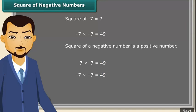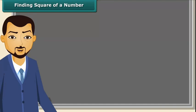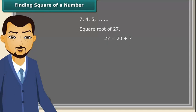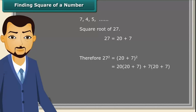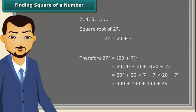Let us now learn about square roots. We can easily find the squares of small numbers like 7, 4, 5, etc. But is it easy to find the square of 27 so quickly? We know 27 is a sum of 20 and 7. Therefore, 27² = (20 + 7)² = 20×20 + 2×20×7 + 7² = 400 + 140 + 140 + 49 = 729.